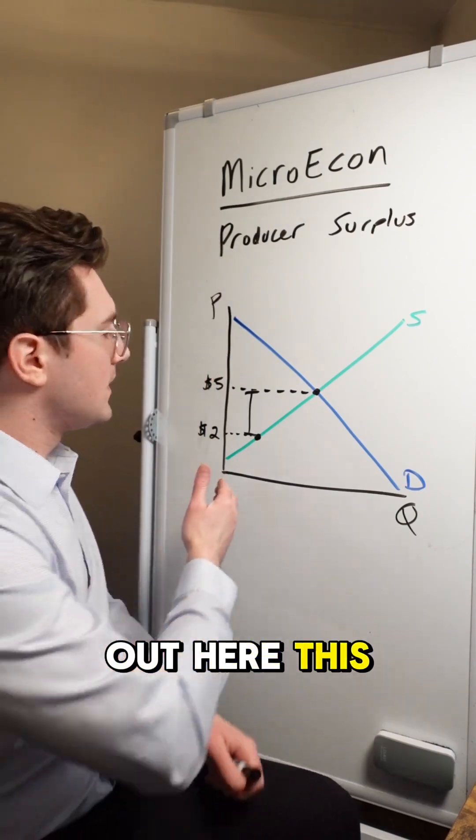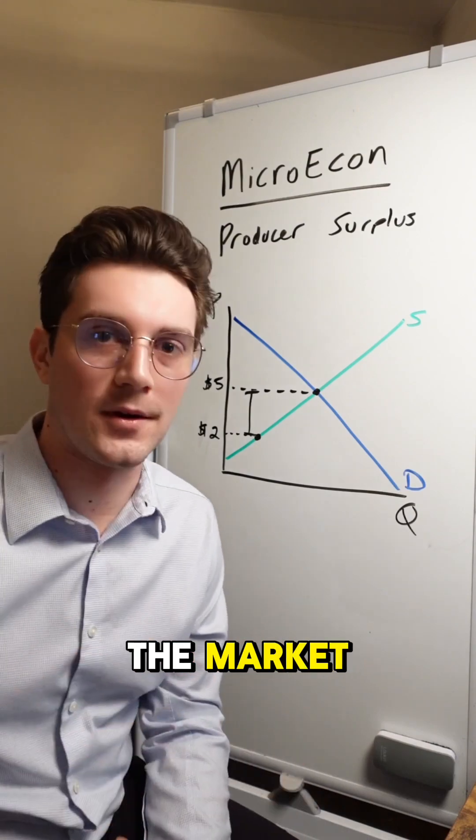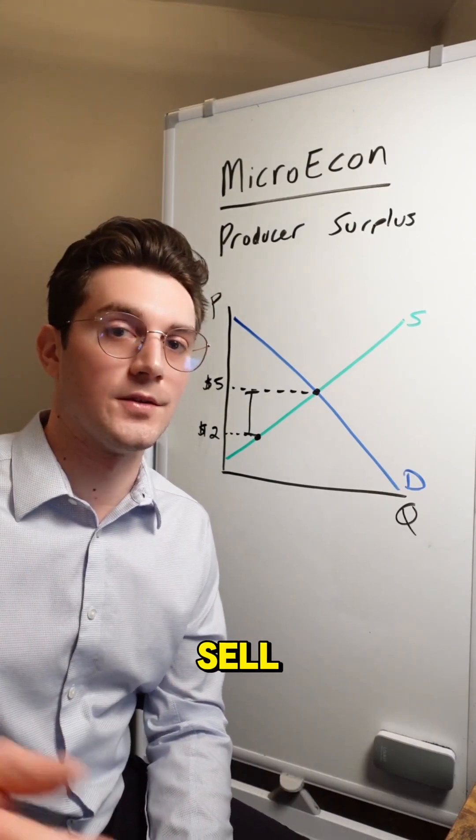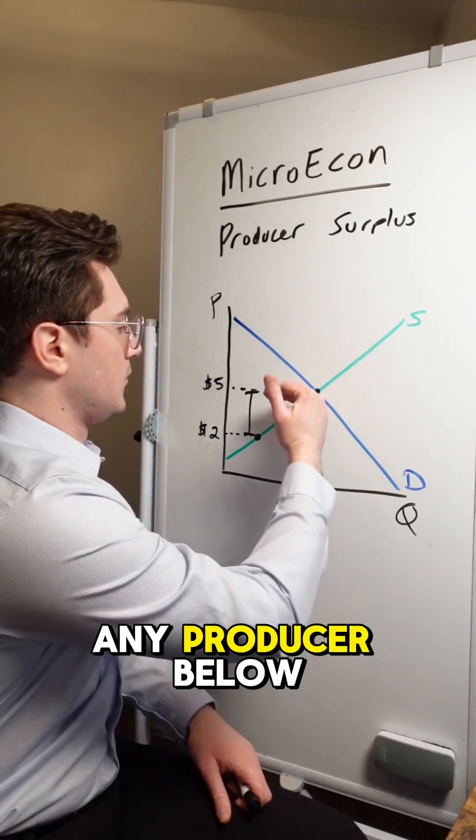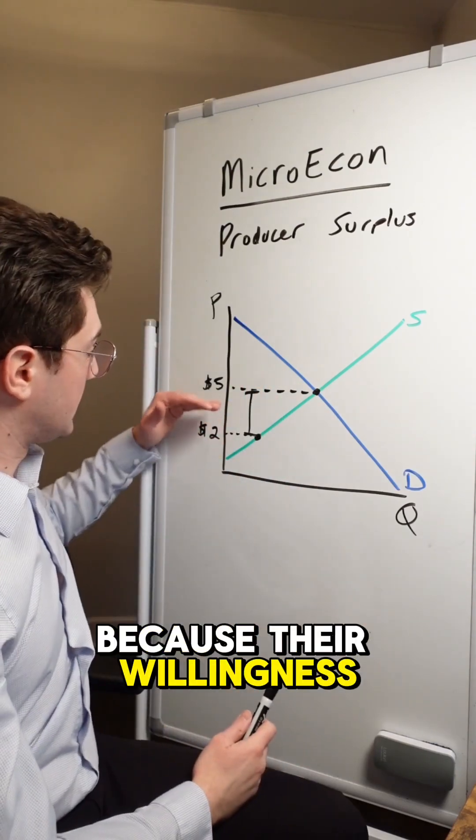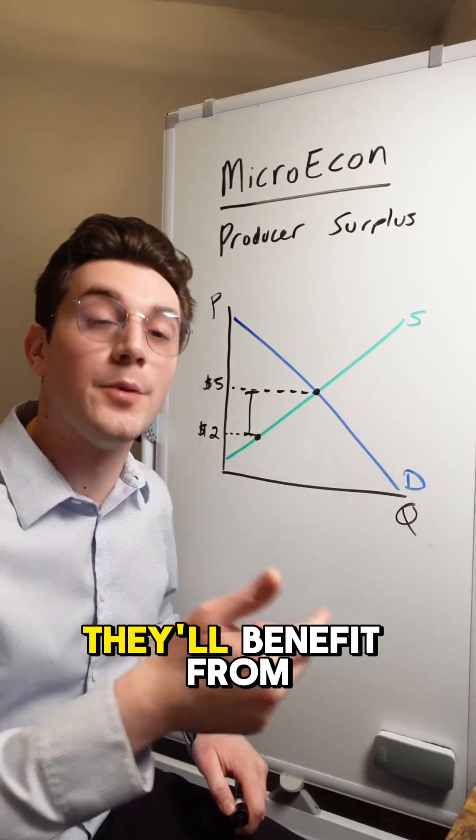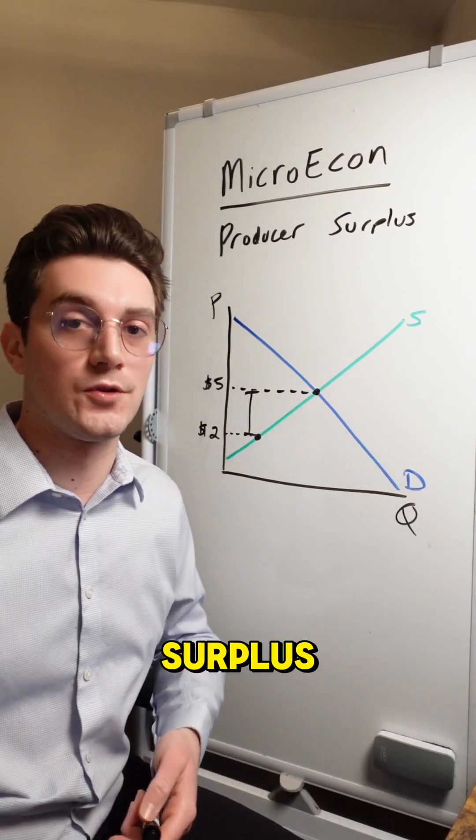When we zoom out here, this whole supply curve right here represents all of the producers in the market and all of their willingness to sell. And just to be clear here, any producer below this equilibrium price is going to sell on the market because their willingness to sell value will be lower than the equilibrium price. And in turn, they'll benefit from selling. They'll achieve producer surplus.